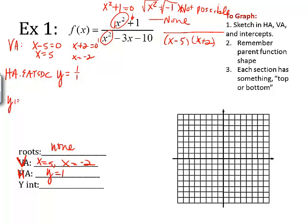Y-intercept? The rule says to replace every x with a 0. 0 plus 1 over 0 minus 3 times 0, which is 0, minus 10, which gives me negative 1 tenth. Be careful that you don't put negative 10. It's negative 1 over 10. So 0, negative 1 tenth.